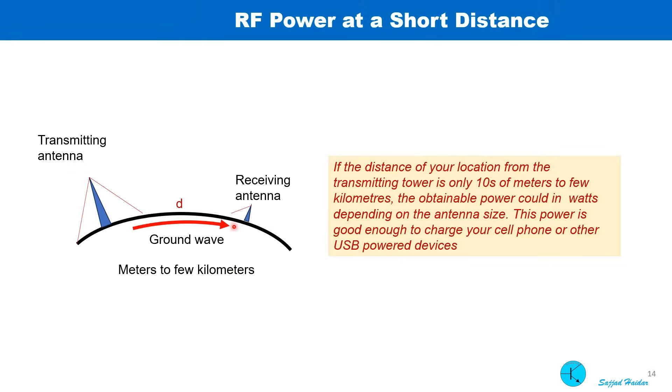If the distance of your location from the transmitting tower is only tens of meters to few kilometers, the obtainable power could be in watts depending on the antenna size. This power is good enough to charge your cell phone or other USB power devices.